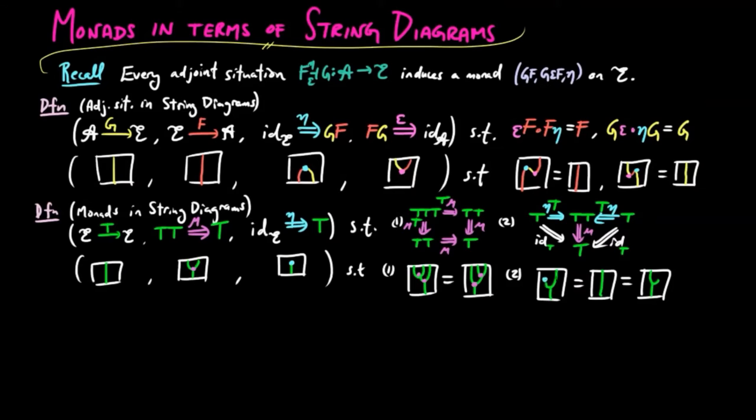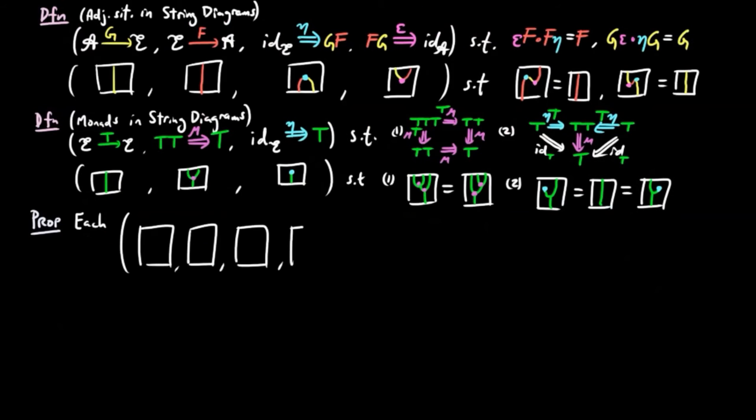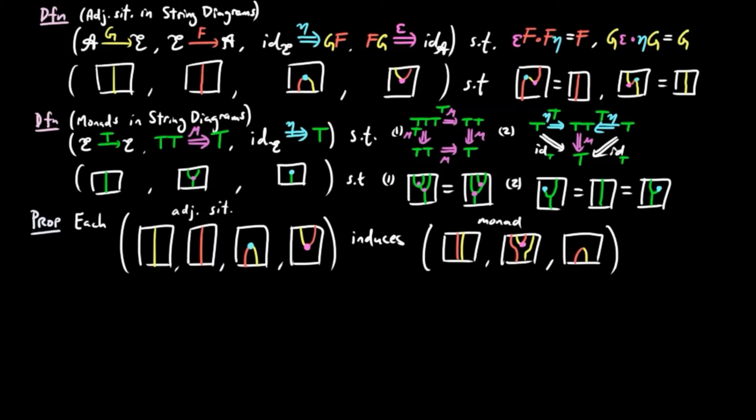Then we can prove the result that each adjoint situation induces a monad in terms of string diagrams.